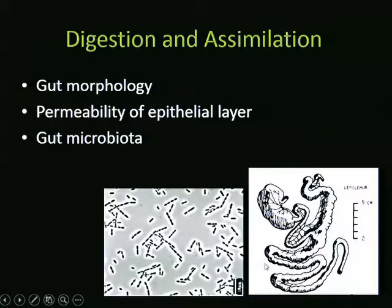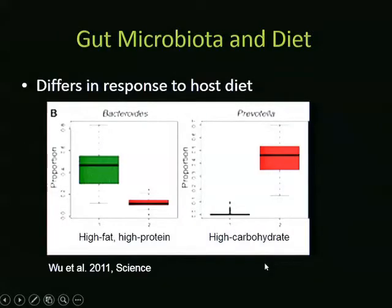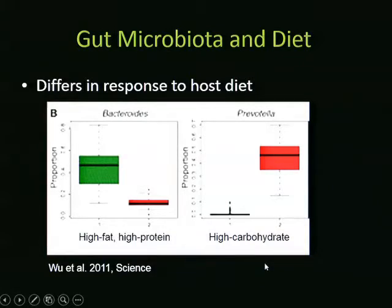Instead, consider what the gut microbiota might be doing. Gut microbes contribute to host digestive efficiency and can produce extra energy and nutrients the host might otherwise not get from their diet. We also know gut microbial communities shift in response to host diet—for example, humans consuming a high fat/high protein diet versus a high carbohydrate diet show different dominant gut microbes. These shifts can happen overnight, and you see them both across populations and within individuals.